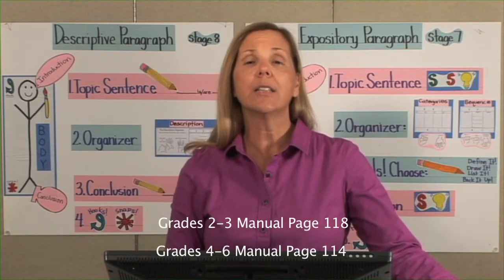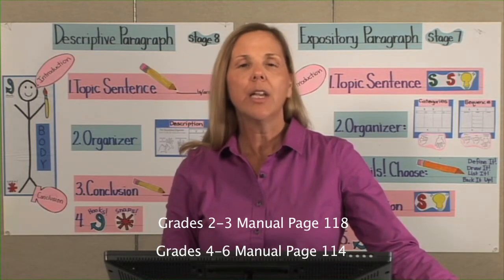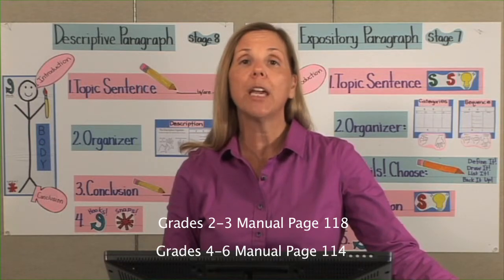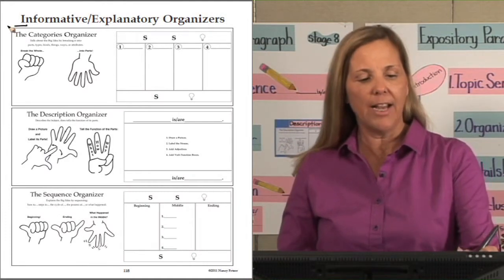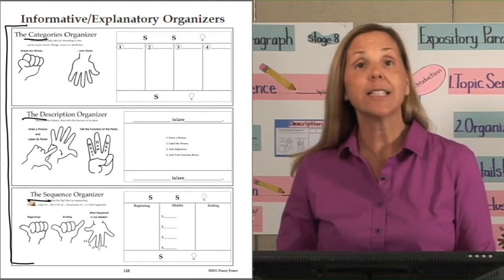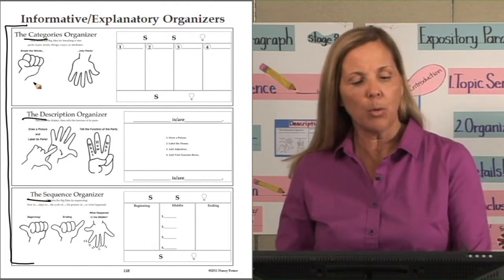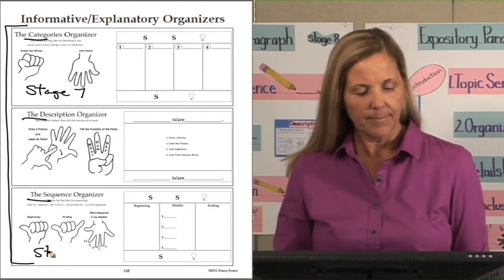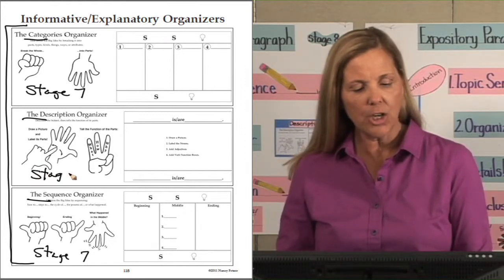If you are in the 2nd and 3rd grade manual, go to page 118. If you are in the 4th through 6th grade manual, go to page 114. On this page you will find three organizers: Categories, Description, and Sequence. Categories and Sequence will be used at Stage 7, and Description will be used at Stage 8.